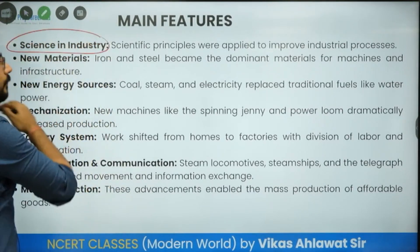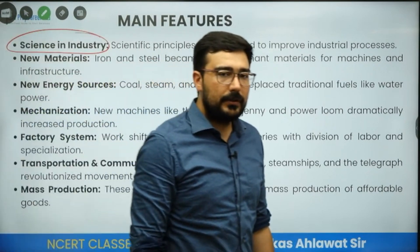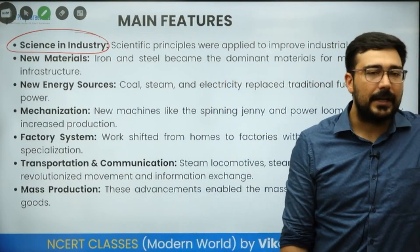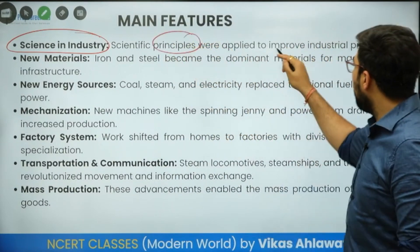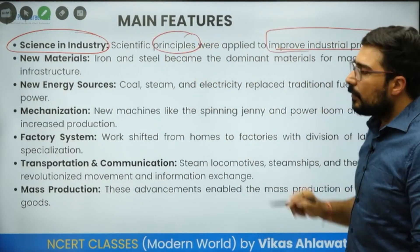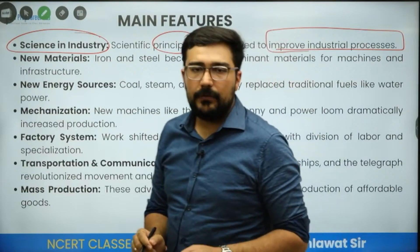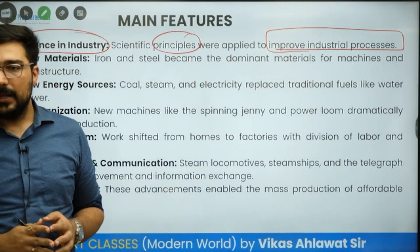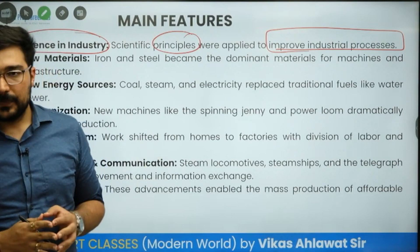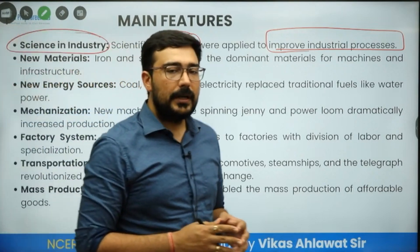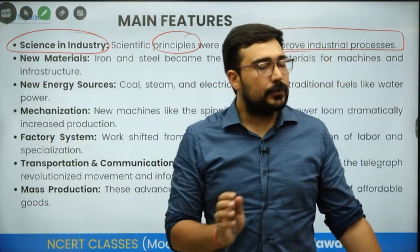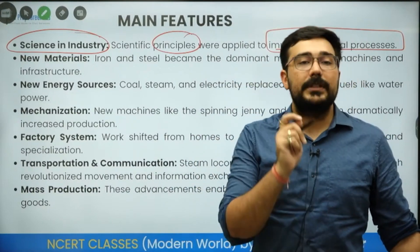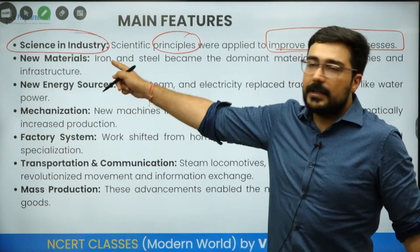What are the major features of industrial revolution? Number one: it is a science-based revolution. Scientific principles were applied to improve industrial processes. Without innovation, without technology, we cannot have industrial revolution. UPSC can ask why industrial revolution started in England. There were many factors responsible, but the most important and catalytic factor is science.